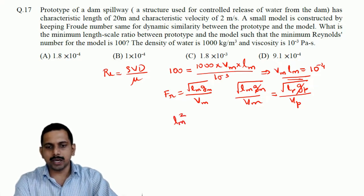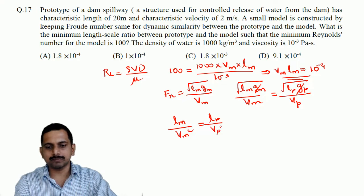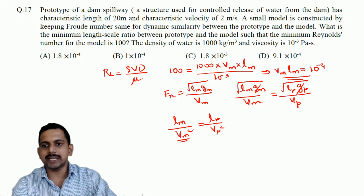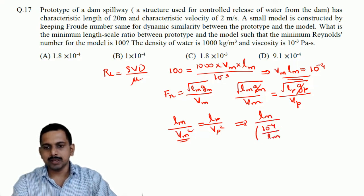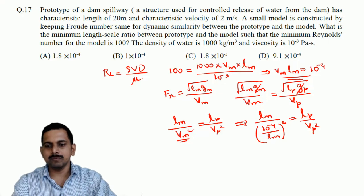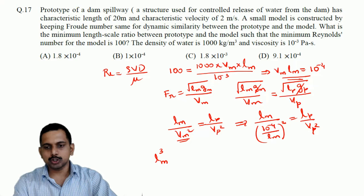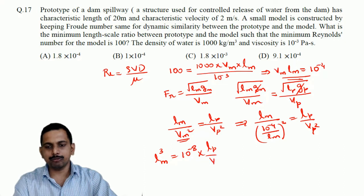So, I can write L M divided by V M square is equal to L P divided by V P square. Now V M here can be set as equal to 10 power minus 4 divided by L M. This implies L M by 10 power minus 4 divided by L M, the whole square, should be equal to L P by V P square. Or we can write this as L M cube should be equal to 10 power minus 8 into L P by V P square.